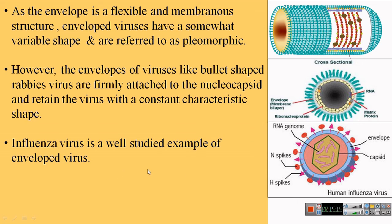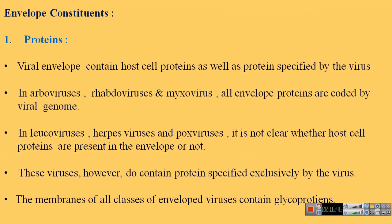The influenza virus is a well-studied example of an enveloped virus. In the influenza virus image, there is an envelope within which peplomers or surface spikes are present, projecting out from the envelope. The envelope is made from three important components: proteins, carbohydrates, and lipids.